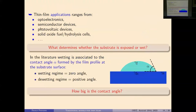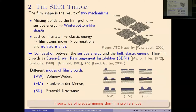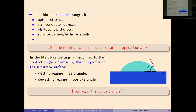This competition is actually very important for applications — thin films are used in optoelectronics, semiconductor devices, and photovoltaic devices. The key is to predetermine the shape of the film. Important questions include: what determines the presence of a wetting layer, when the substrate is exposed or covered, and what determines the contact angle alpha formed by the film profile when touching the substrate.